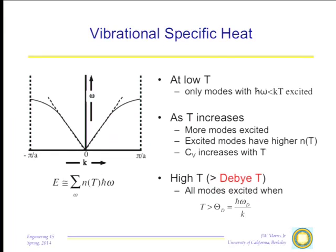Starting from absolute zero with no phonons excited, as temperature rises you excite more and more phonons. One simple way to visualize this: let ω_T be the upper bound of frequencies in the high-temperature limit. Draw a line at the omega appropriate to the temperature you're considering. All phonons below that line are fully excited; all above are, to first approximation, not excited at all. As you move that line up, more modes come into play until every mode is excited and you reach the high-temperature limit.